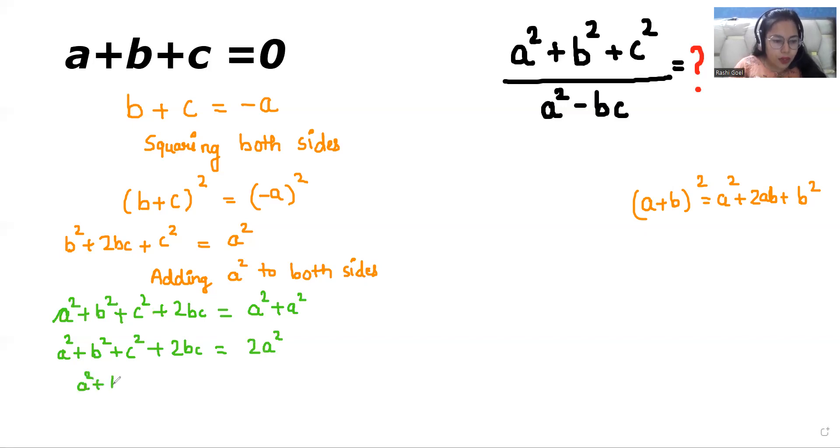So a square plus b square plus c square, if I take 2bc to the other side, so two a square minus two bc, and from the right hand side I can take 2 as common. So what is left? a squared minus bc.